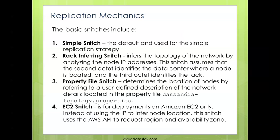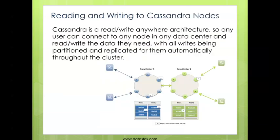You might say that's not how my data centers are laid out, and that's fine. You can then use the property file snitch, where you use a file and define how your data centers are laid out, assign that to Cassandra, and that's what it will use to actually replicate the data across your database cluster. If you want to use Cassandra in the cloud, then you can use the EC2 snitch. Instead of IP addresses, it's going to use an AWS API to figure out regions, availability zones, and things like that.